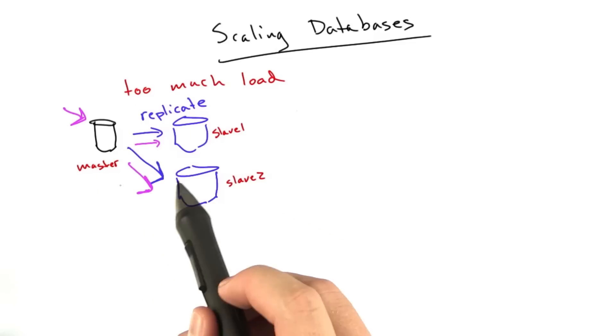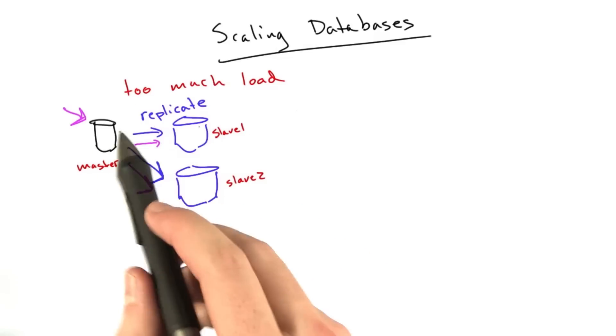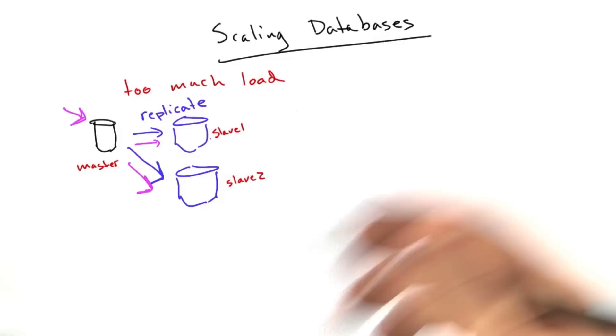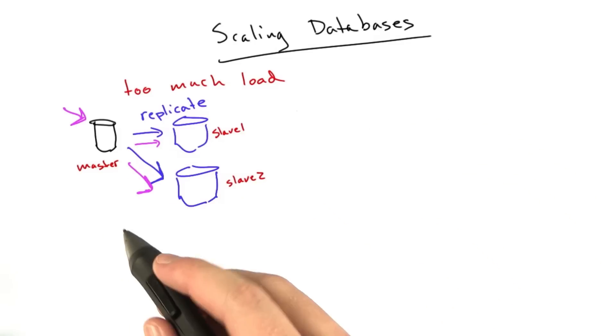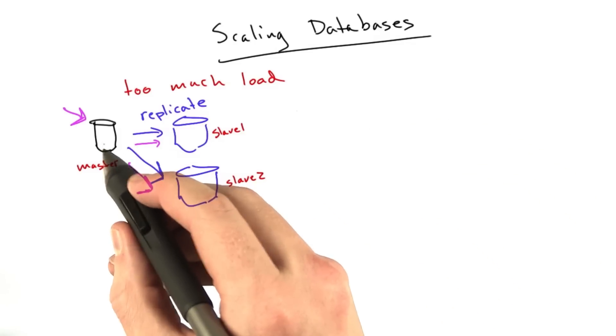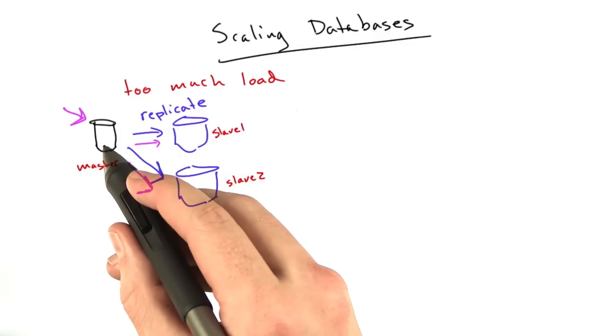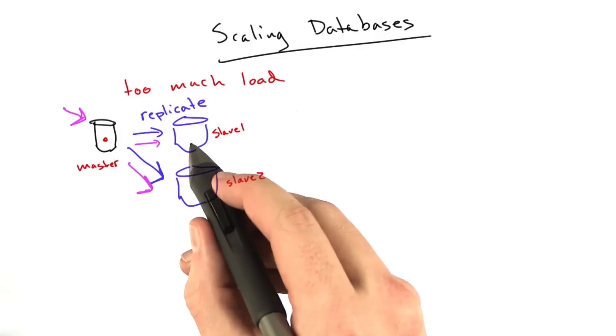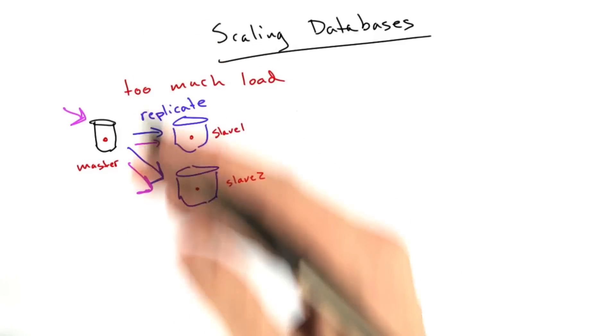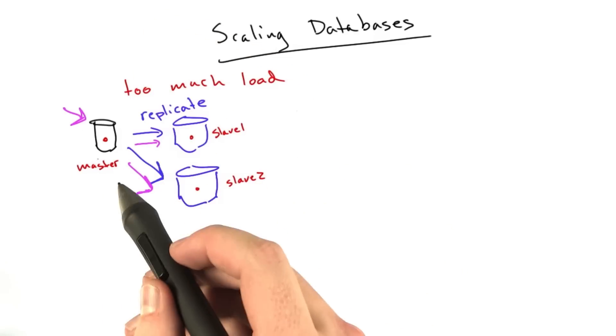So every time we insert a piece of data to this database, we send it over to the other guys. All of our database writes go into this one master database. In turn, all of that data gets replicated to these slave databases.